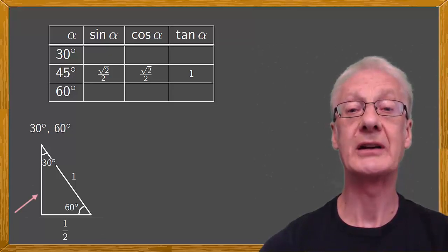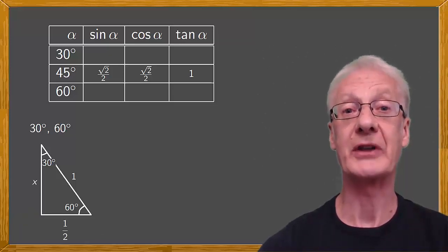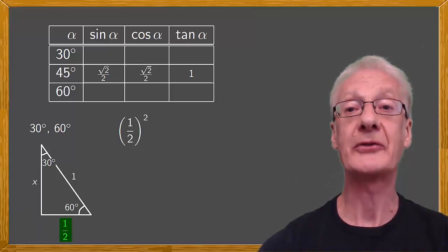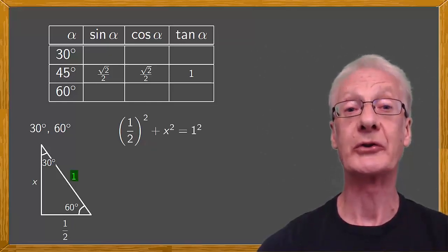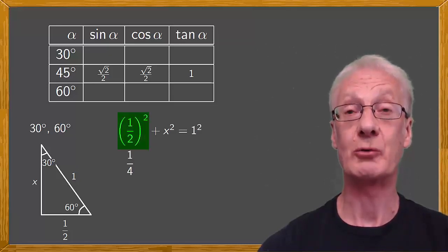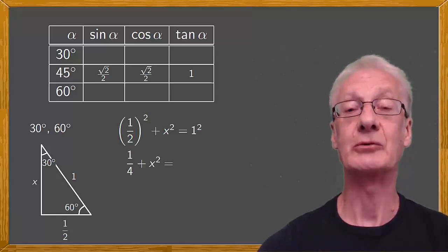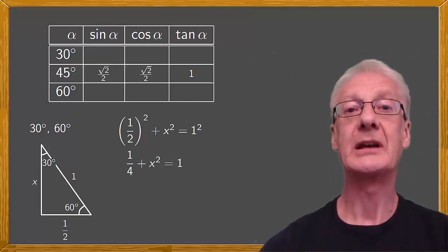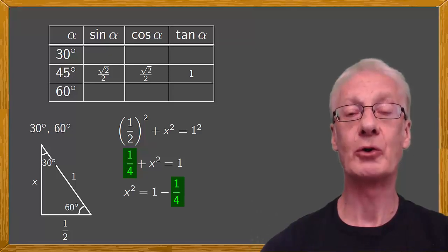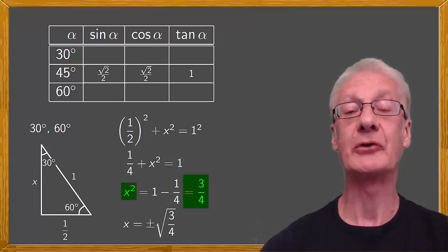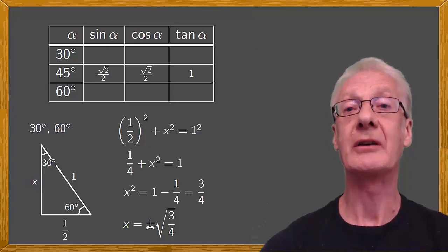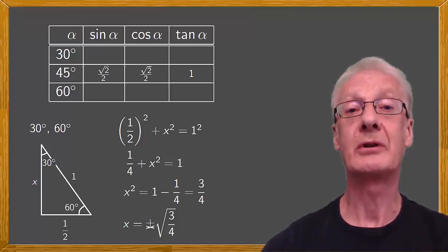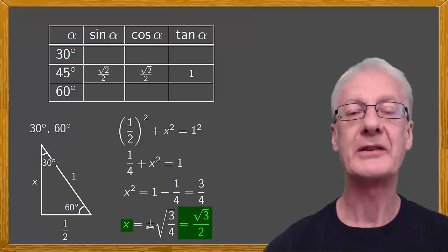Now let's calculate the length of this side, which we'll call x. Applying Pythagoras' theorem again: the square of this side, a half squared, plus x squared, is equal to the hypotenuse squared, 1 squared. So we have a quarter plus x squared equals 1. Rearranging gives x squared equals 1 minus a quarter, which is 3 quarters. Taking the square root of both sides, x equals plus or minus the square root of 3 quarters. But remember, x is a length, so it must be positive. Therefore x equals root 3 quarters, or root 3 over 2. We'll write this in our triangle.